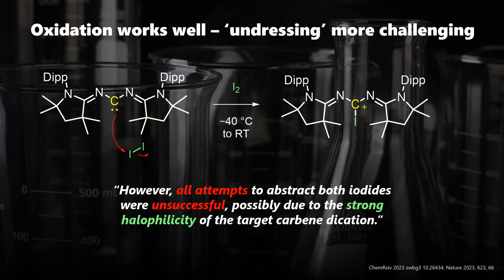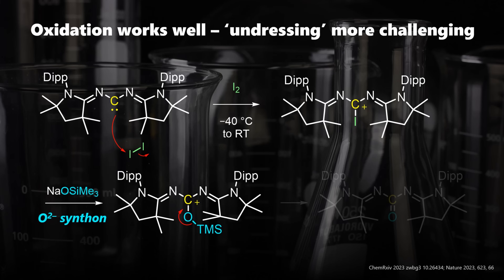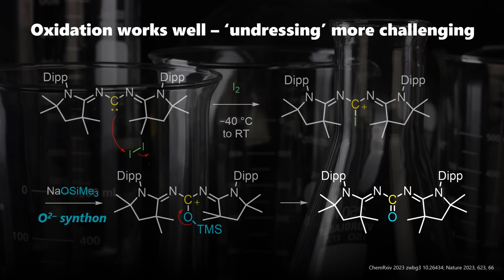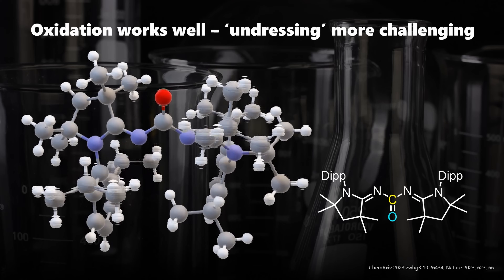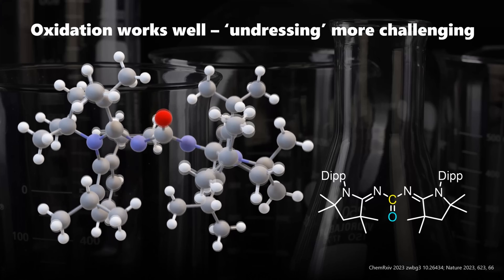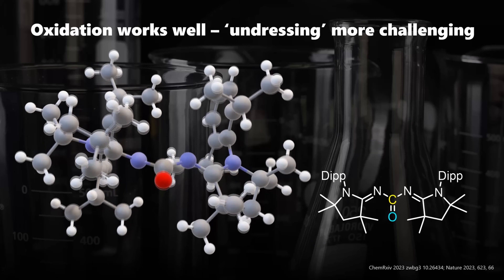However, undressing the carbon by elimination of iodide did not work at all. This might be because the carbon has a particularly high affinity to halogens. They took a detour by adding sodium trimethylsiloxide — essentially an oxide dianion synthon — which swaps out the iodide, leading to a neutral carbonyl compound, all in one pot.